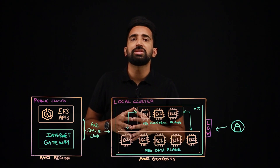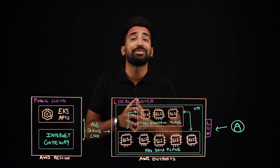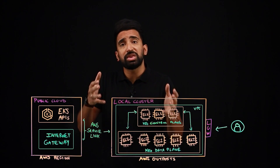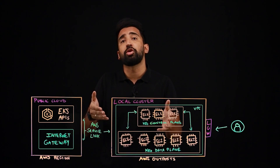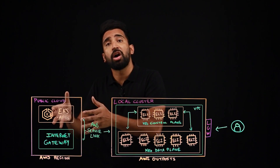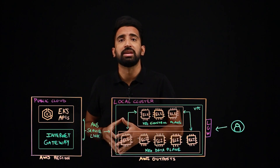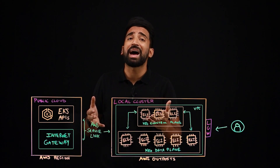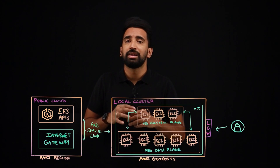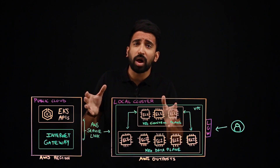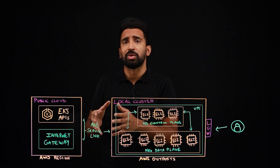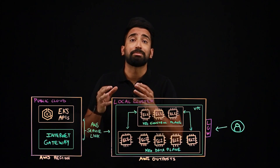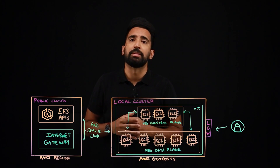For some users, it may make sense to take advantage of the extended cluster architecture, with the Kubernetes control plane running on the parent AWS region. This enables you to save capacity on-premises. Note that the quality of the network connection here is critical, since network disconnects might lead to application downtime.